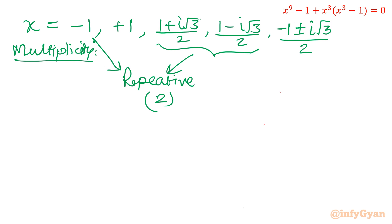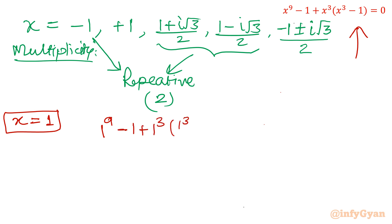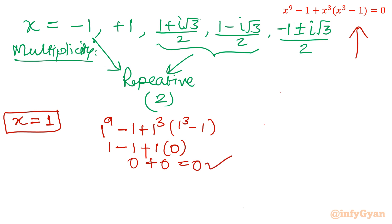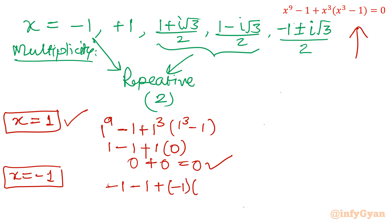Let us verify the two real values. For x equals 1: 1 power 9 minus 1 plus 1 power 3 times (1 power 3 minus 1) equals (1 minus 1) plus 1 times 0 equals 0 plus 0 equals 0. Verified. For x equals negative 1: (negative 1) power 9 minus 1 plus (negative 1) power 3 times ((negative 1) power 3 minus 1) equals negative 2 plus 2 equals 0. Verified.